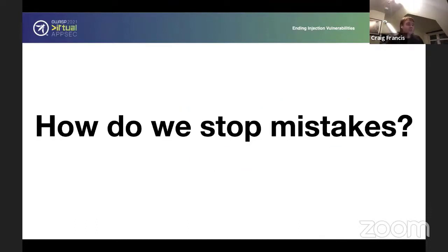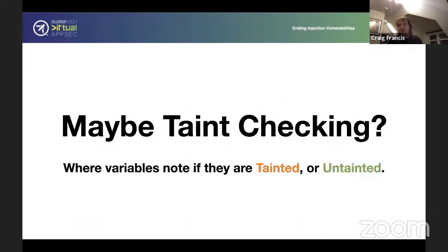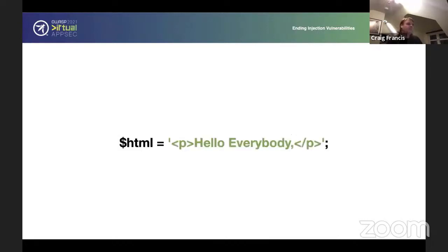So how do we stop these mistakes? There is a technique called taint checking, where variables are notably are tainted or untainted. It kind of works. But as we'll see, there are a couple of issues. So how does it work? First of all, you have a string. And because it's defined in the source code, it is untainted. Therefore, the variable, in this case, HTML, is marked as untainted.